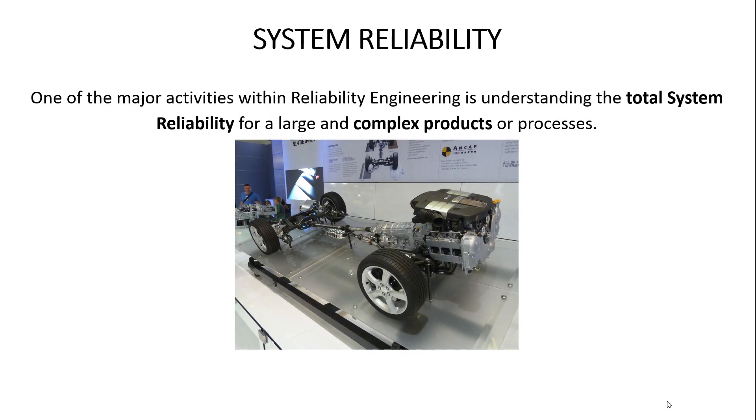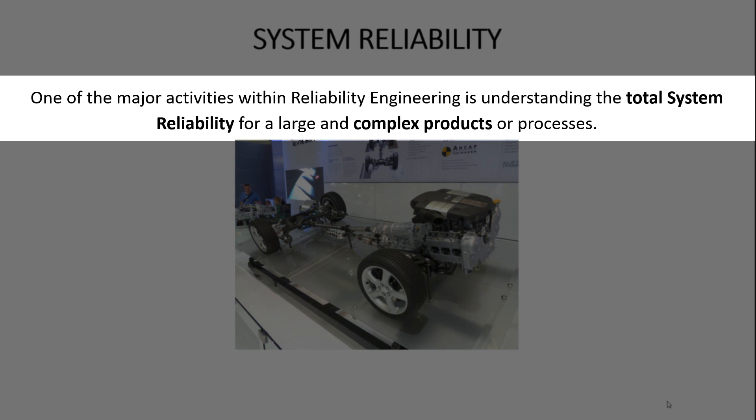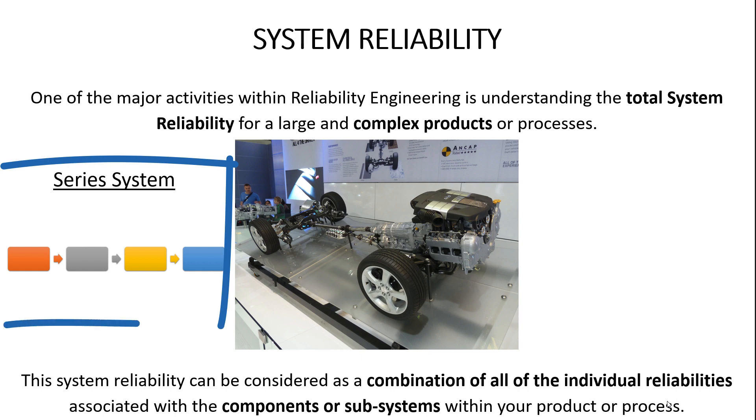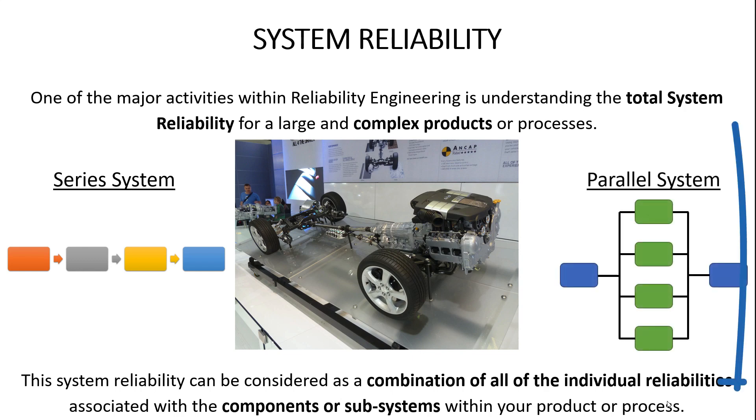One of the major activities within both quality and reliability engineering is understanding the total reliability of a system for a very large complex product or process. When you think about the reliability of let's say an automobile, this is a powertrain, you have to think about the combination of all the individual reliabilities associated with the components and the subsystems that make up that process. And like I mentioned before, there's kind of two major categories or types of systems. The first is a series system. These are where our components or our subsystems work in a linear series with each other. And the next is a parallel system. So we'll of course cover both of those today.